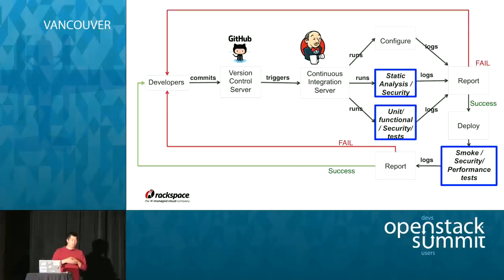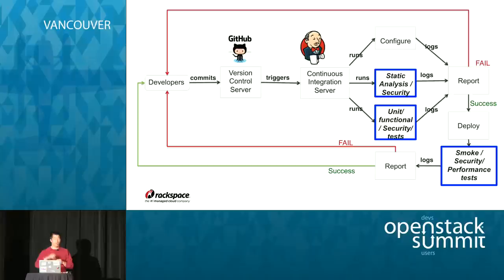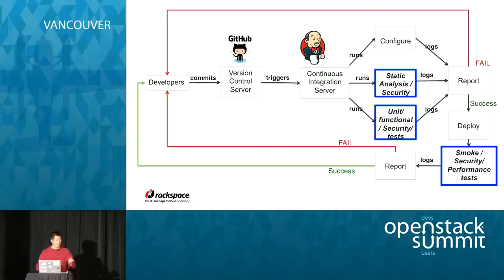Once the build is successful, it moves to the next stage: deployment. Once deployed to a predefined environment — like staging or pre-production — we run all kinds of tests: smoke tests to check functionality, performance tests, and also security tests to make sure everything we deploy to production is secure. If anything fails, alerts are sent to the team and they take action to correct them.